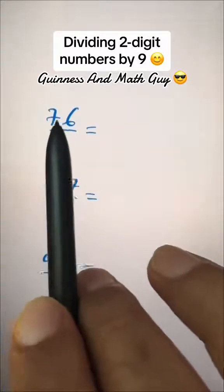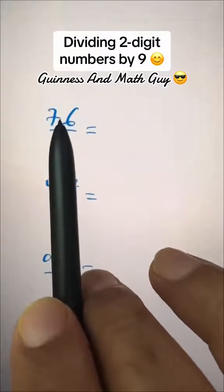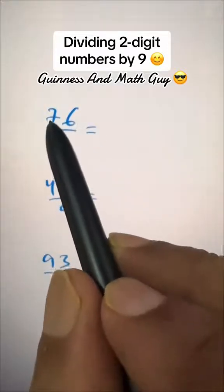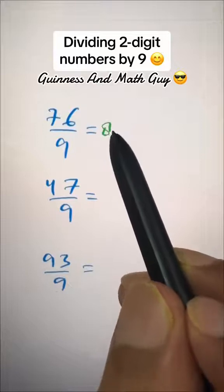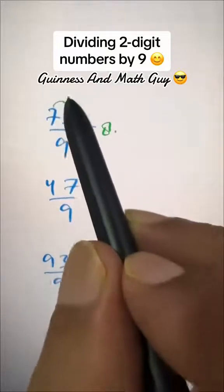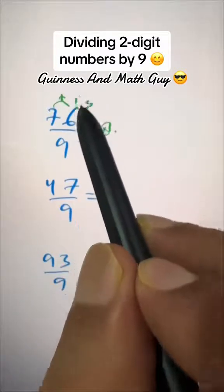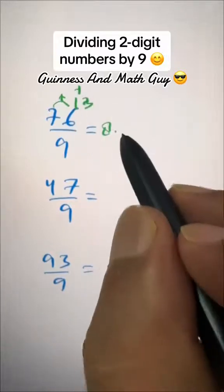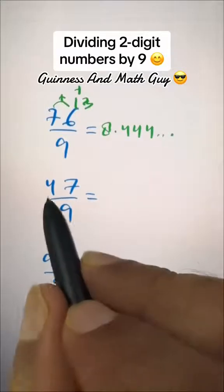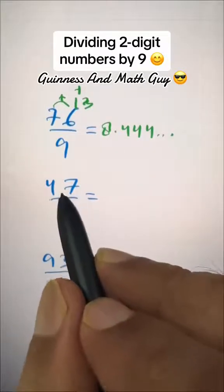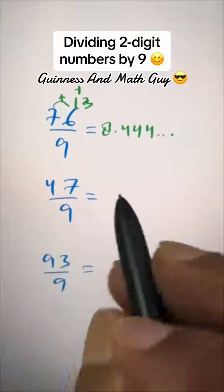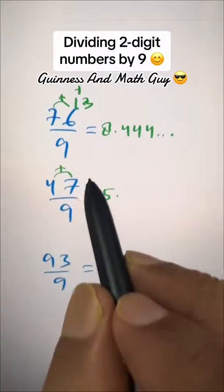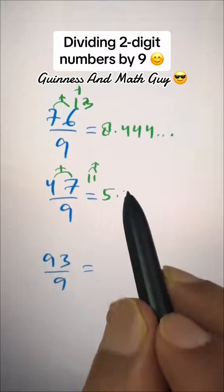If you see that the two digits add up to more than nine, they give you a two-digit number. Then instead of seven, write the next number, eight, then point: seven plus six is thirteen, and one plus three is four, so four four four and so on. Here, four plus seven is eleven — two-digit number — so write five instead of four, then point: four plus seven is eleven, then one plus one is two, so two two two and so on.